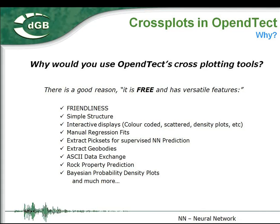You can draw manual regression fits — you don't need automatic regression fits, you can draw them yourself using the mouse. You get an extra big set so that you can do seismic prediction using neural networks, and you can extract geological bodies from seismic data. The data exchange model is in ASCII file format, so data goes in and out as ASCII. You can also predict rock properties, and we have added Bayesian probability density plots through this cross-plot tool.